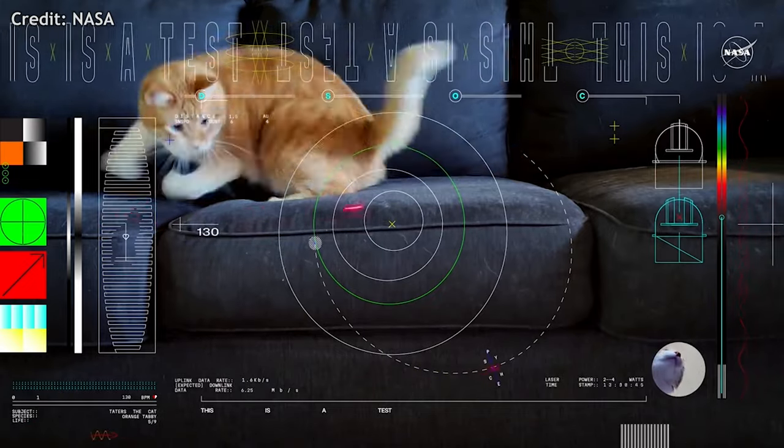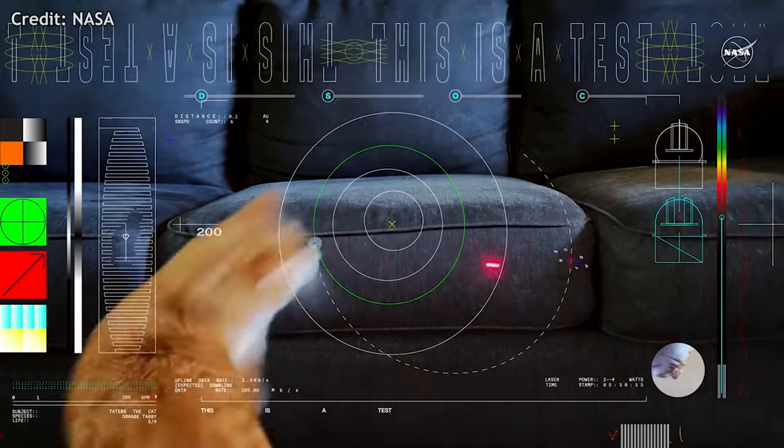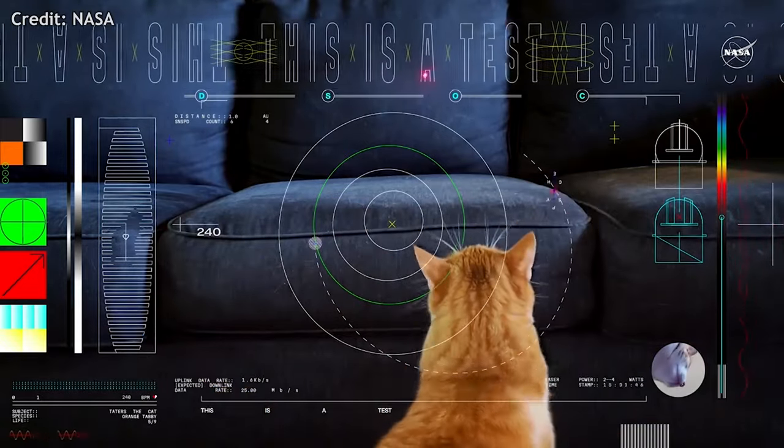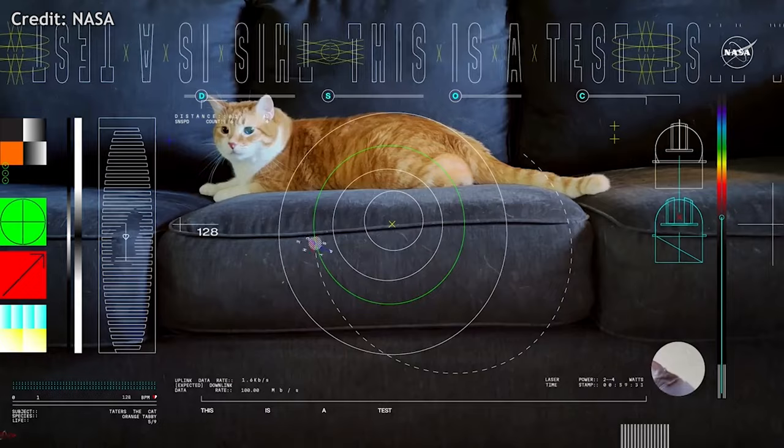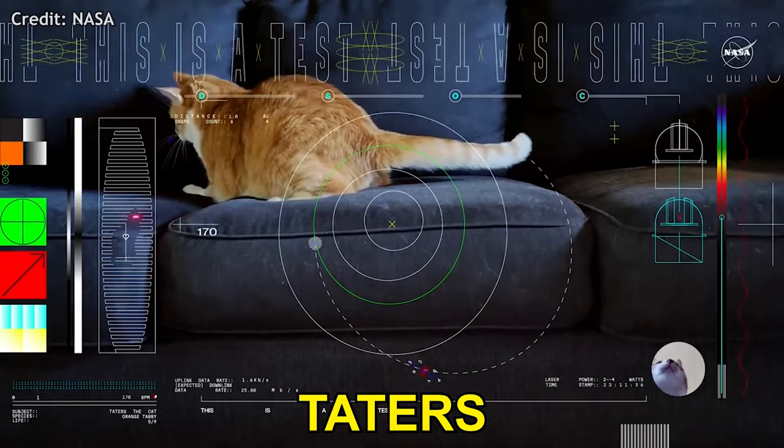Yes, you heard that right. NASA has sent a video from 19 million miles away using a laser beam. That's farther than any video transmission ever done before. And the video they sent was not some boring test footage, but a cute clip of a cat named Taters chasing a laser pointer.